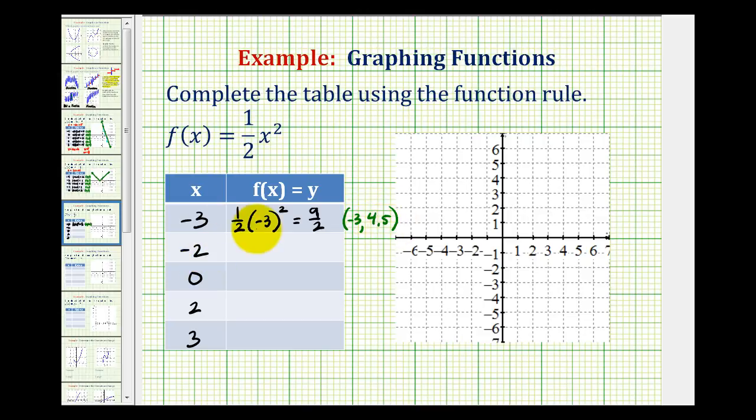When x is equal to negative two, the function value, or y-value, would be one half times negative two squared. Well, negative two squared is positive four, and one half times positive four is equal to two. So the graph of the function would also contain the point with an x-coordinate of negative two and a y-coordinate of two.